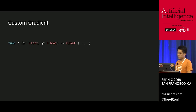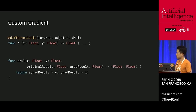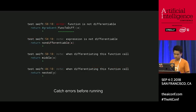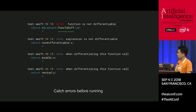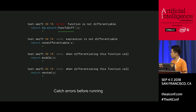Swift also supports custom gradients, which is a commonly requested feature. For example, given a times operator, you can apply a custom gradient on it. All you have to do is use the differentiable attribute to specify the reverse-mode adjoint for this function. When automatic differentiation sees the code, it'll automatically call into the adjoint when differentiating data flow. Because automatic differentiation is language-integrated, it shows you errors at compile time when you're differentiating a non-differentiable function, with cursors pointing exactly at each non-differentiable operation in the call stack. In the future, we also plan to support warnings for numeric stability.